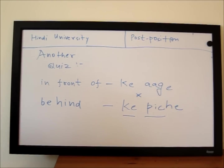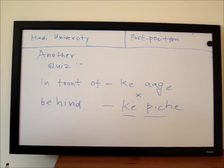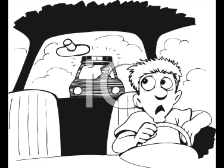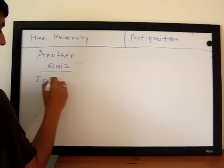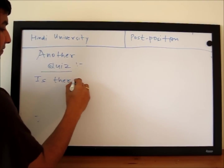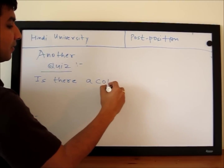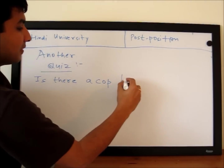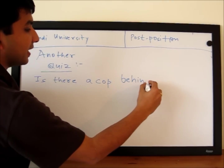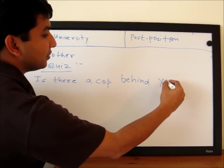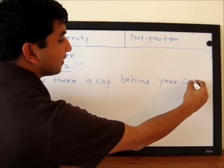Now your quiz is — imagine a situation where one of your friends is speeding, and you want to ask him: 'Is there a cop behind you?' or 'Is there a cop behind your car?'